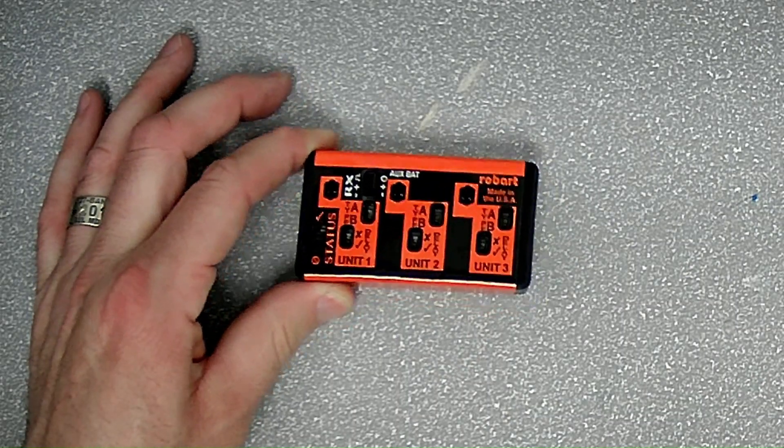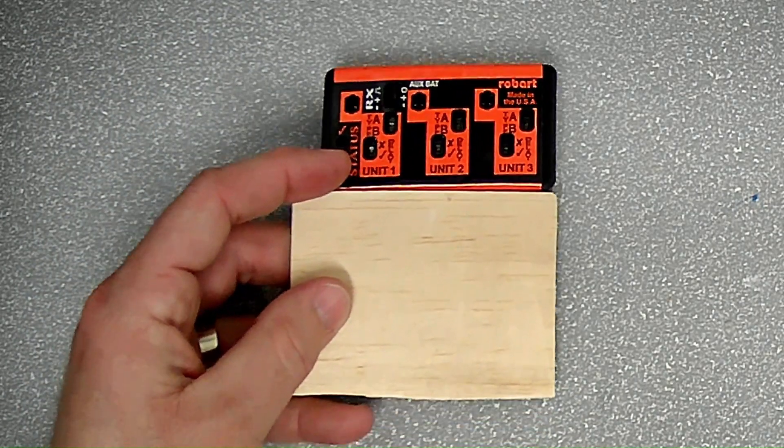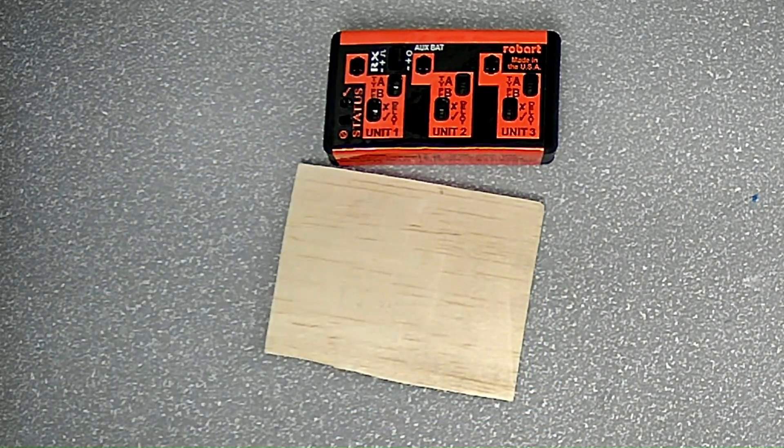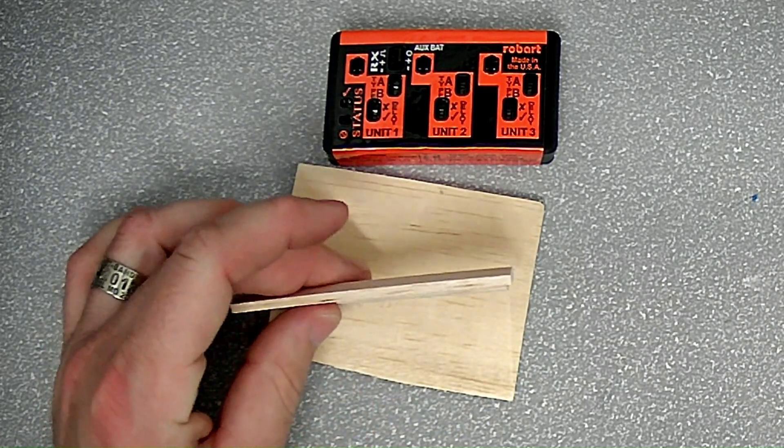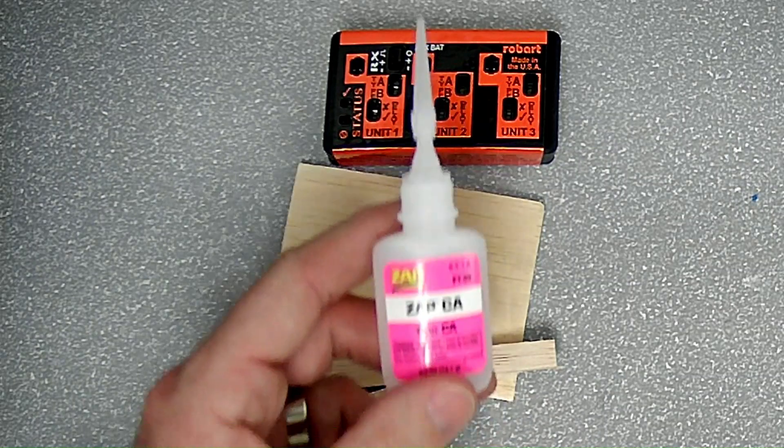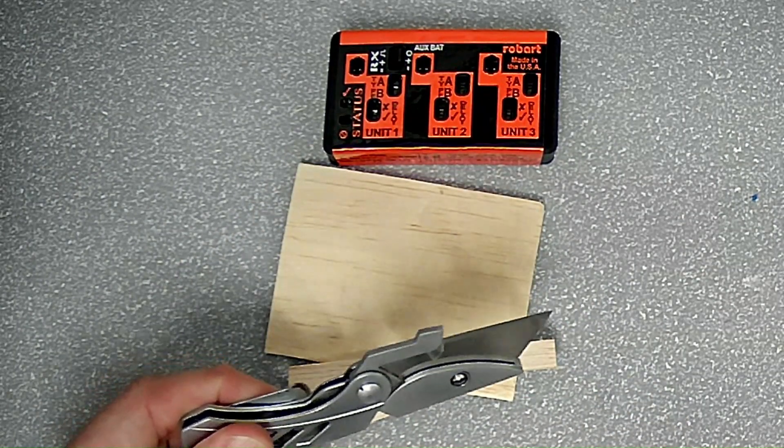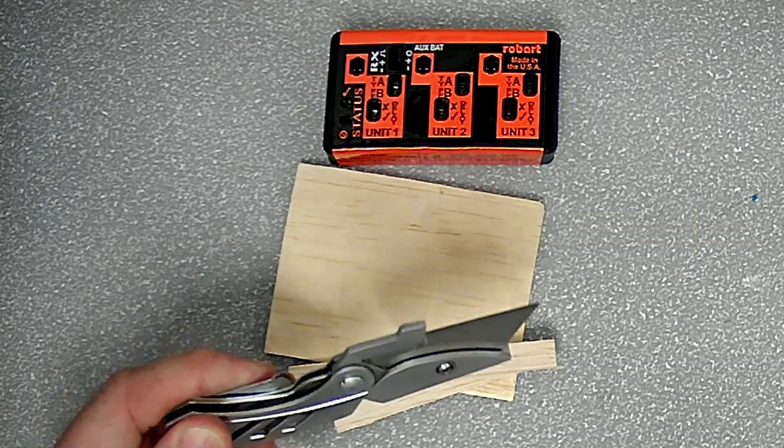You've got your control box. The next thing you're going to need is a small square of balsa, two other small pieces of balsa, some Zapp CA, and an X-Acto knife for cutting the balsa.